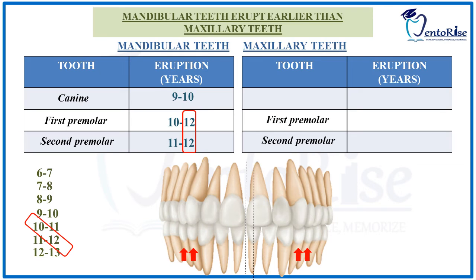So we have two age groups: 10 to 12 years and 11 to 12 years for the mandibular premolars. For the maxillary premolars, we have 10 in common: the maxillary first premolar erupts between 10 to 11 years and the maxillary second premolar between 10 to 12 years. Grossly, you can remember that all maxillary and mandibular premolars erupt between 10 to 12 years. In the mandibular teeth, 12 is in common; in the maxillary teeth, 10 is in common.